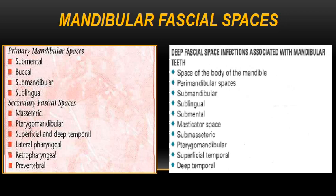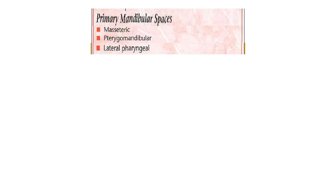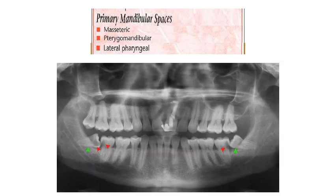The secondary facial spaces are the masseteric, pterygomandibular, superficial and deep temporal, lateral pharyngeal, retropharyngeal, and prevertebral. However, in some instances, some spaces might not play a secondary role and may present as the primary space where the infection first invades — depending on where the infection comes from. The masseteric, pterygomandibular, or even the lateral pharyngeal may be regarded as primary mandibular spaces when the lower wisdom tooth is involved.